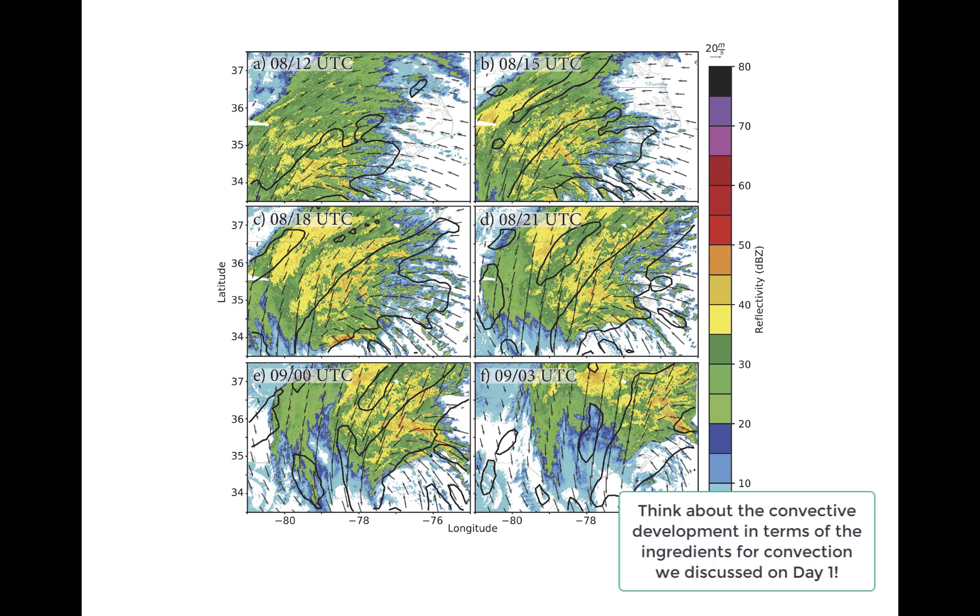The warm, moist air rose isentropically as it moved inland in a conditionally unstable environment.